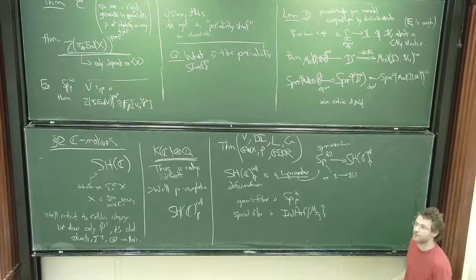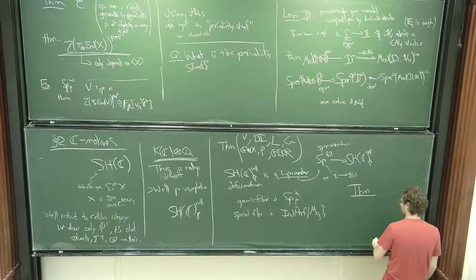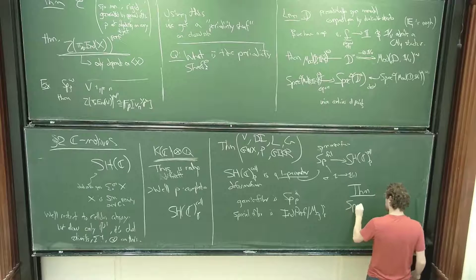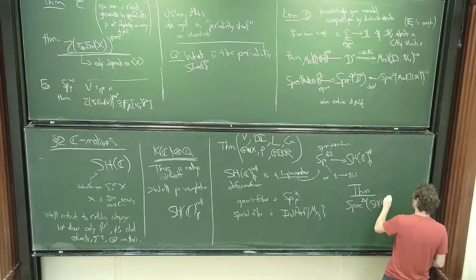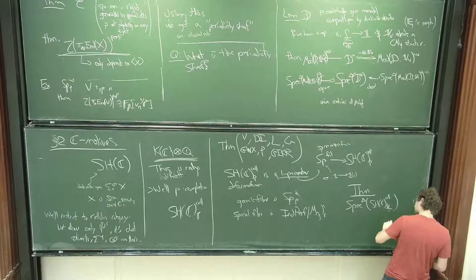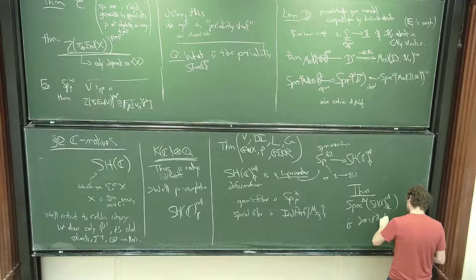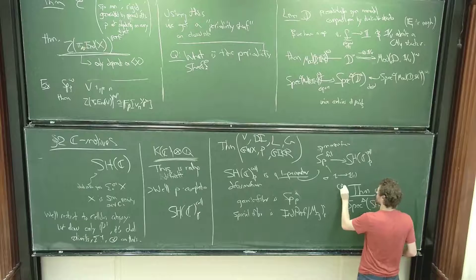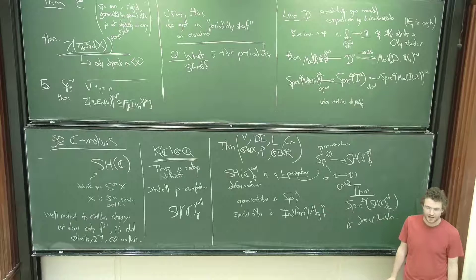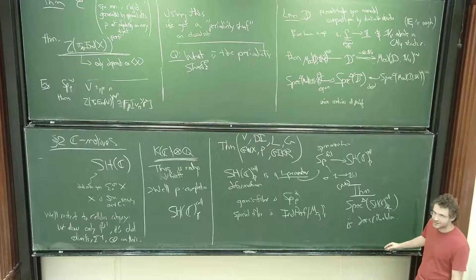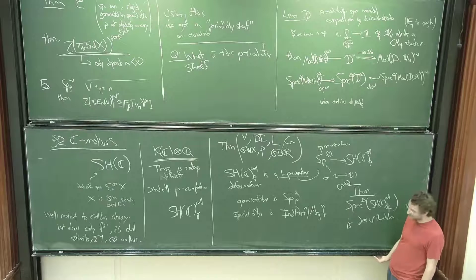I can now state the meta-theorem: the Balmer spectrum of SH(C), cellular, 2-complete, is describable. My goal by the end of the talk — probably won't be accomplished, but maybe kind of close — is to describe the Balmer spectrum.